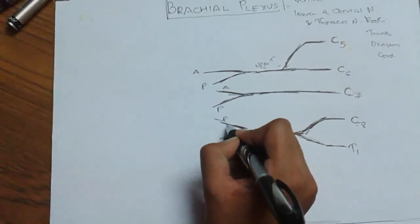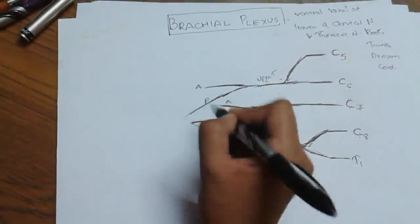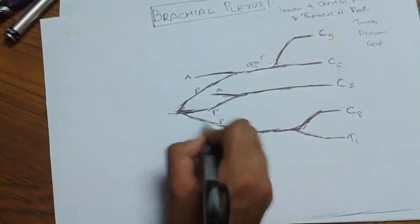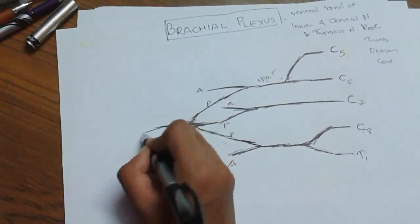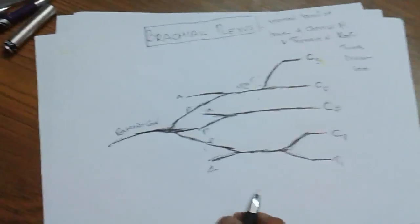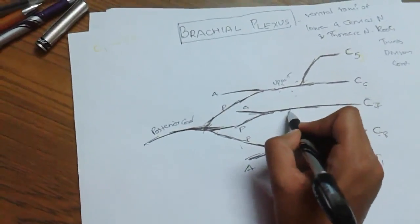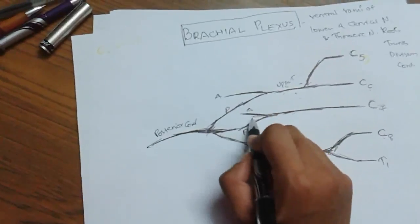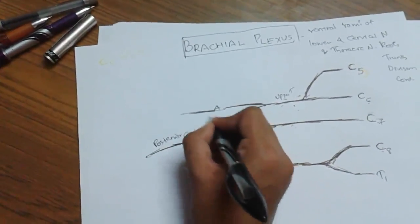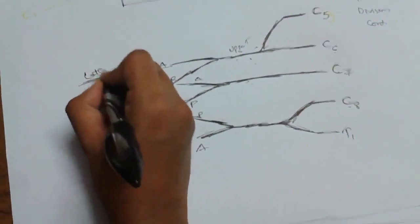All the posterior divisions are combined together to form a cord — that is the posterior cord. All three posterior divisions combine to form the posterior cord. The anterior divisions of the upper and middle trunk combine to form the lateral cord.